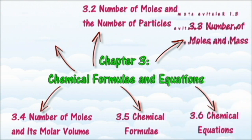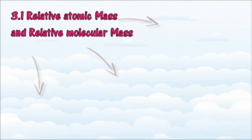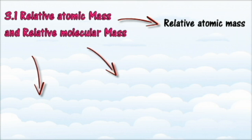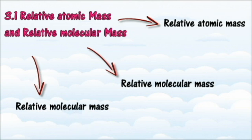In Section 3.1, we will learn about the concepts of Relative Atomic Mass and Relative Molecular Mass. At the end of this section, you should be able to state the meaning of Relative Atomic Mass based on the Carbon-12 scale, state the meaning of Relative Molecular Mass based on the Carbon-12 scale, state why Carbon-12 is used as a standard for determining Relative Atomic Mass and Relative Molecular Mass, and calculate the Relative Molecular Mass of substances.